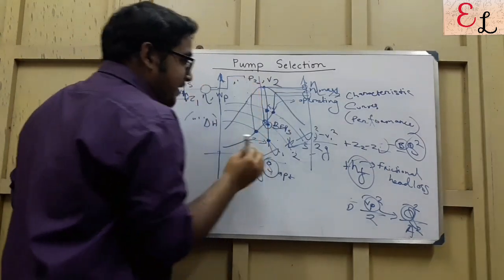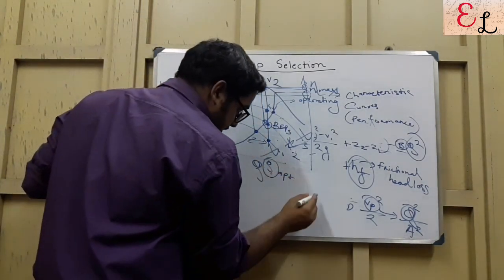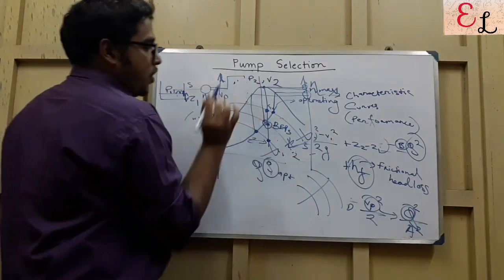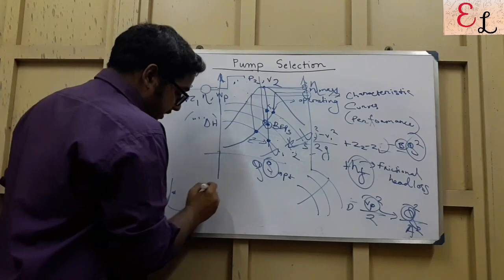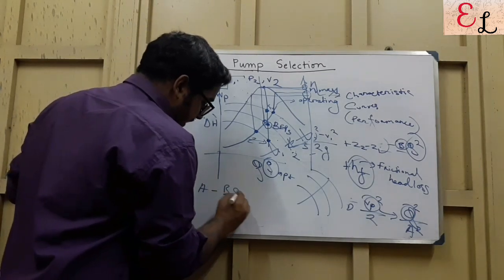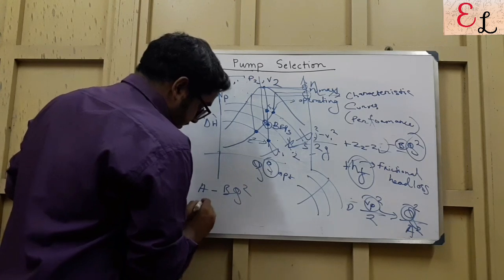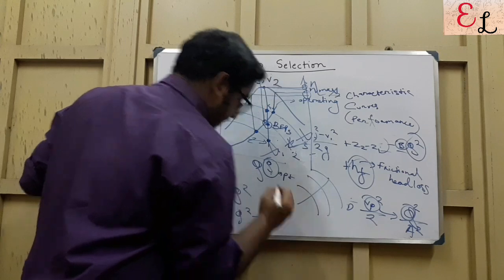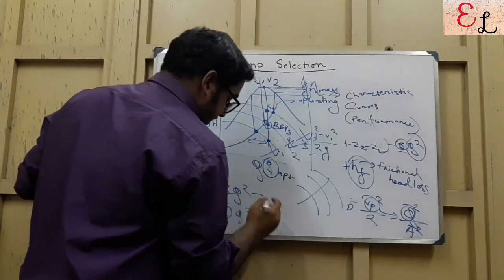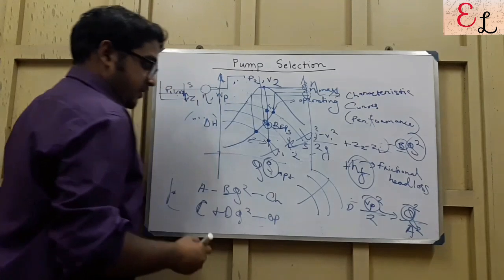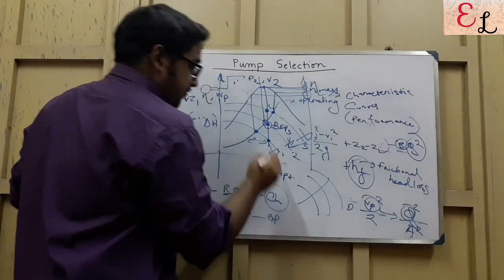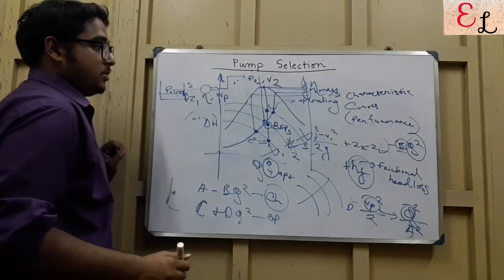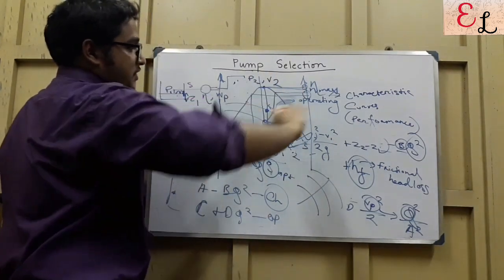So you need to find the cutting of the head characteristic curve and the head operating curve, one being A minus BQ square, another being C plus BQ square. Operating curve is from the equation of energy balance and this is from head characteristic curve. And the best efficiency point is going to be selected. So we are going to select pump 2 here. And this is how the selection is done, referring to the efficiency.